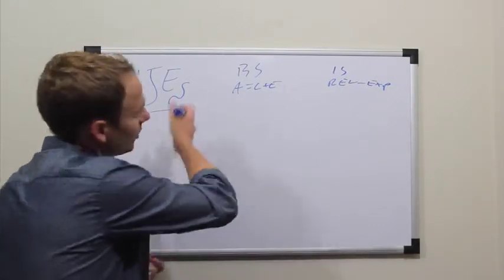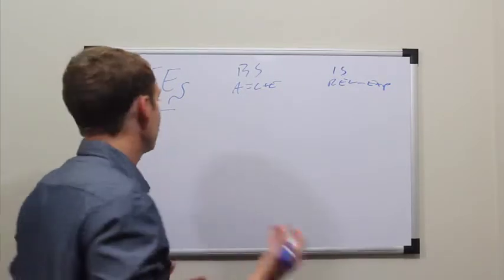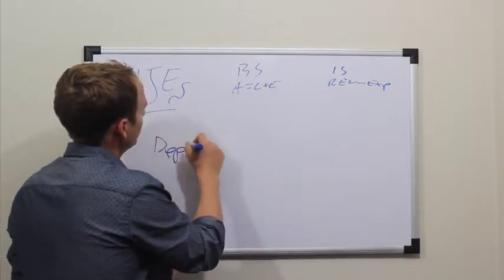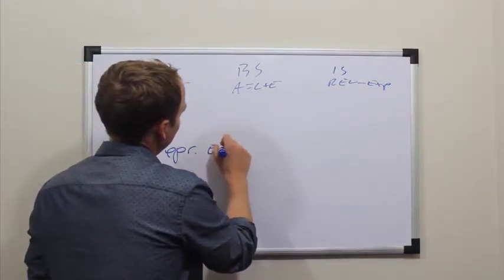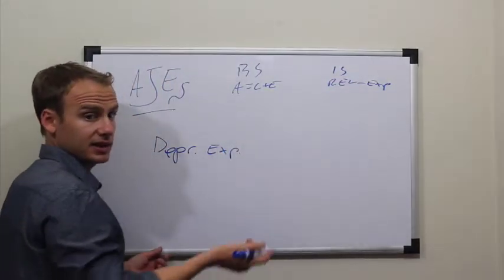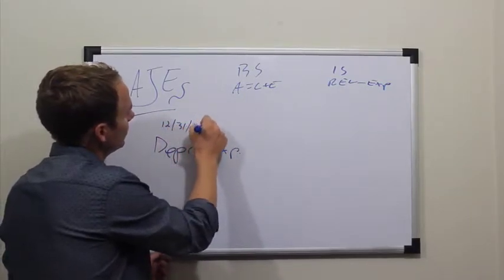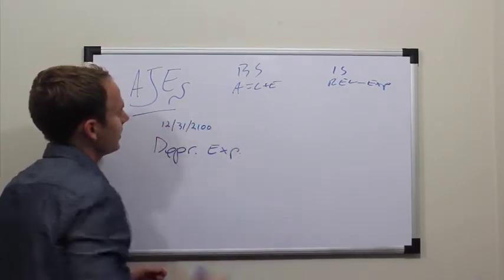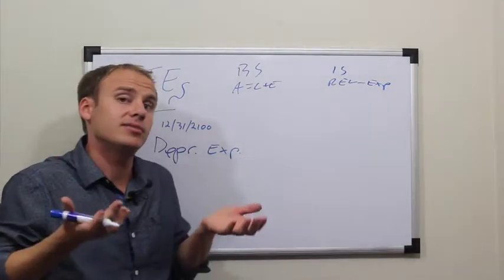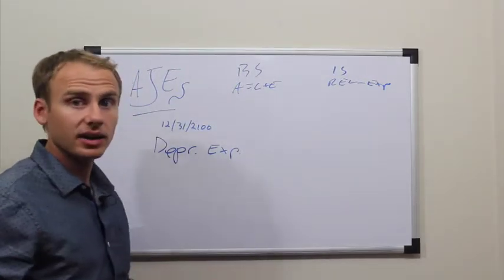Adjusting journal entries always employ debits and credits, which are increasing and decreasing transactions. For example, you'd record depreciation expense at a specific date and time, such as December 31, 2100. This would be showing that the value of these tangible assets have been decreasing due to natural wear and tear, like a car.